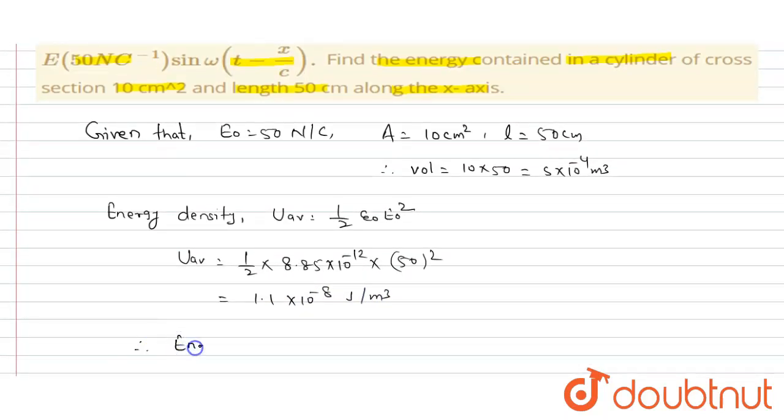Therefore, energy = U_average × volume. U_average energy density is 1.1 × 10⁻⁸, and volume is 5 × 10⁻⁴.